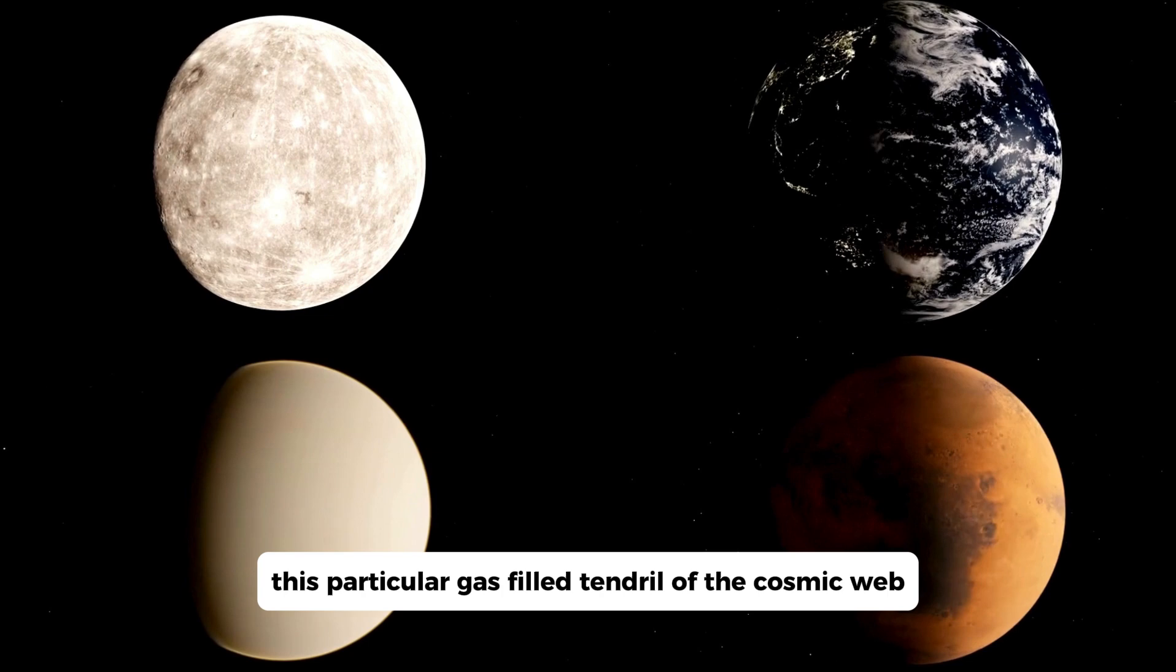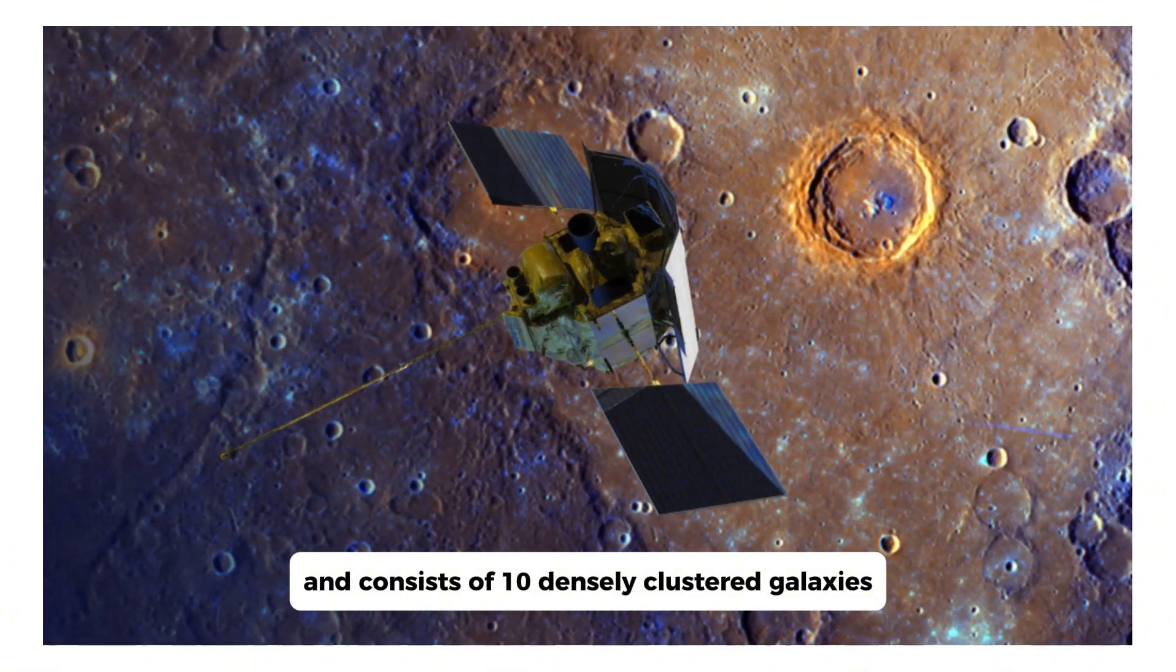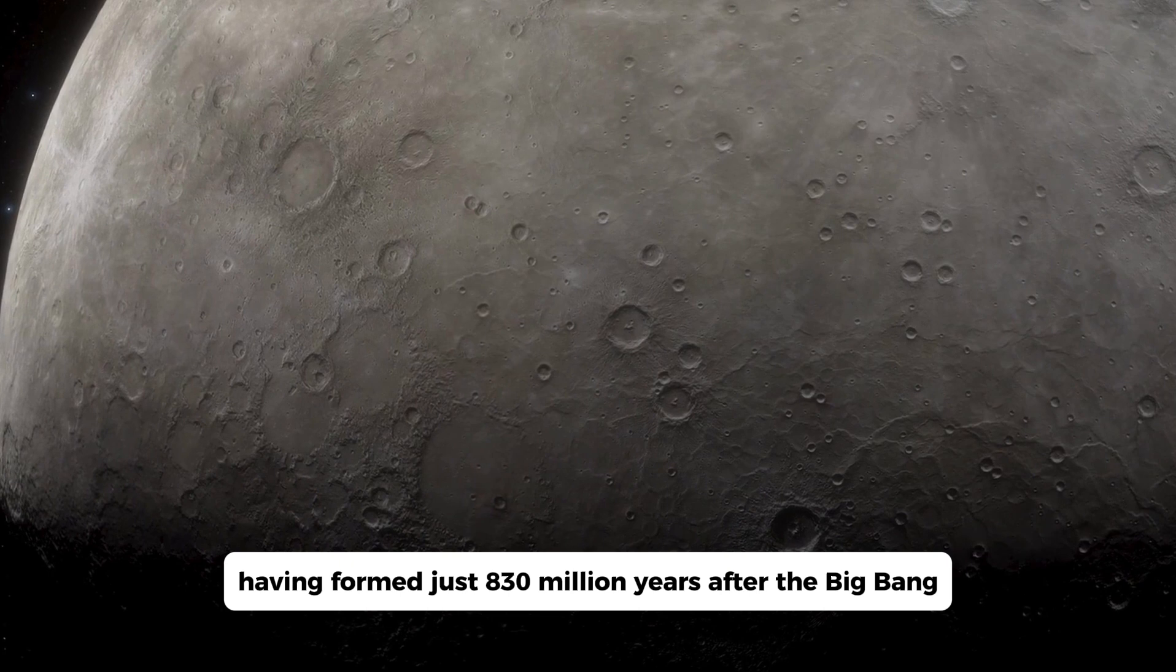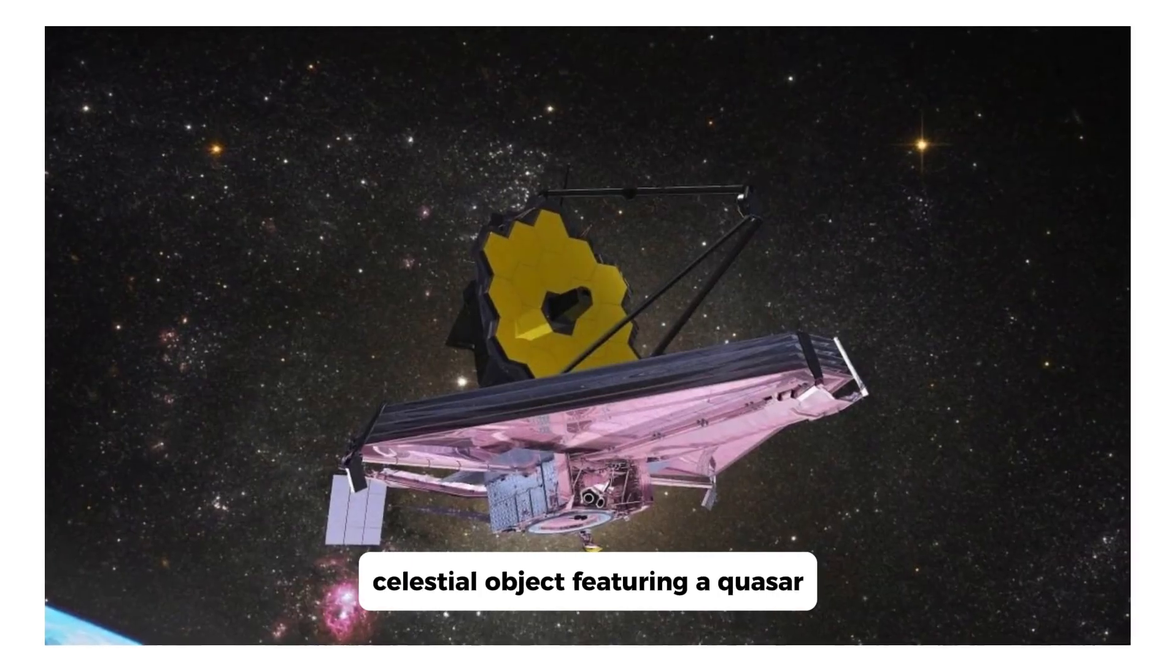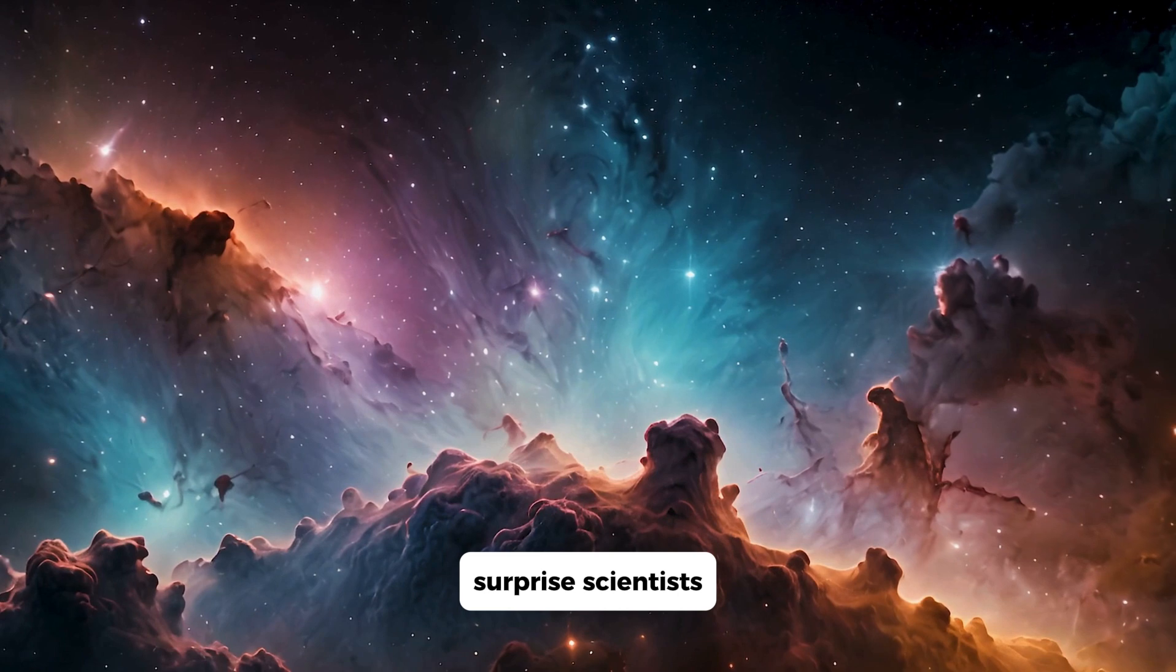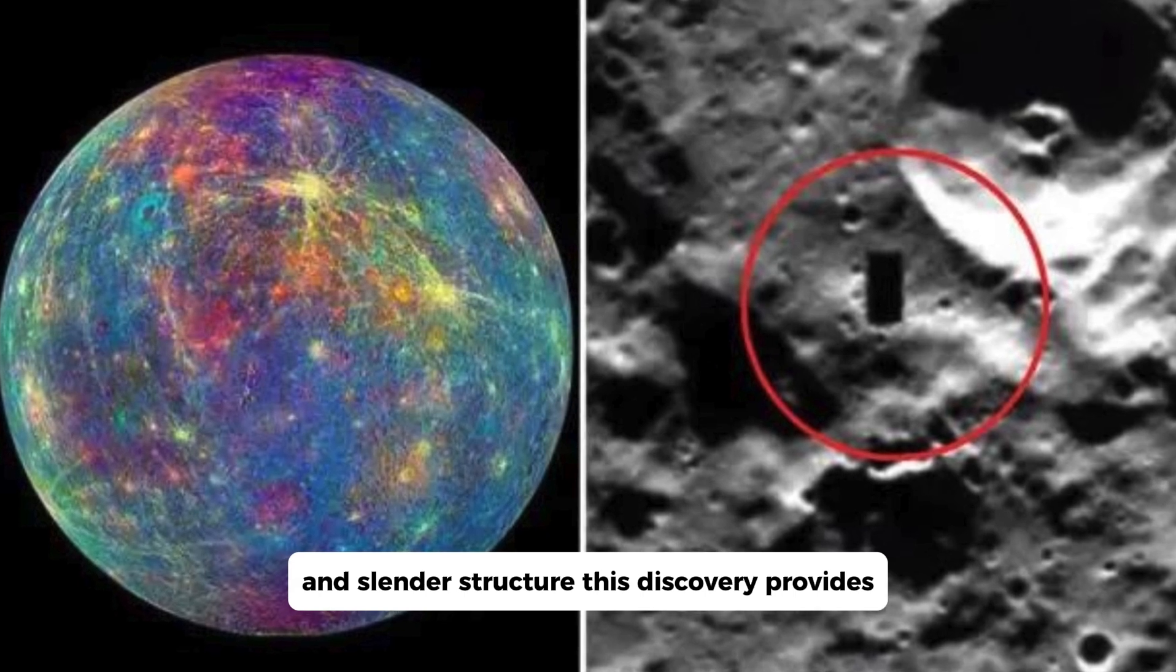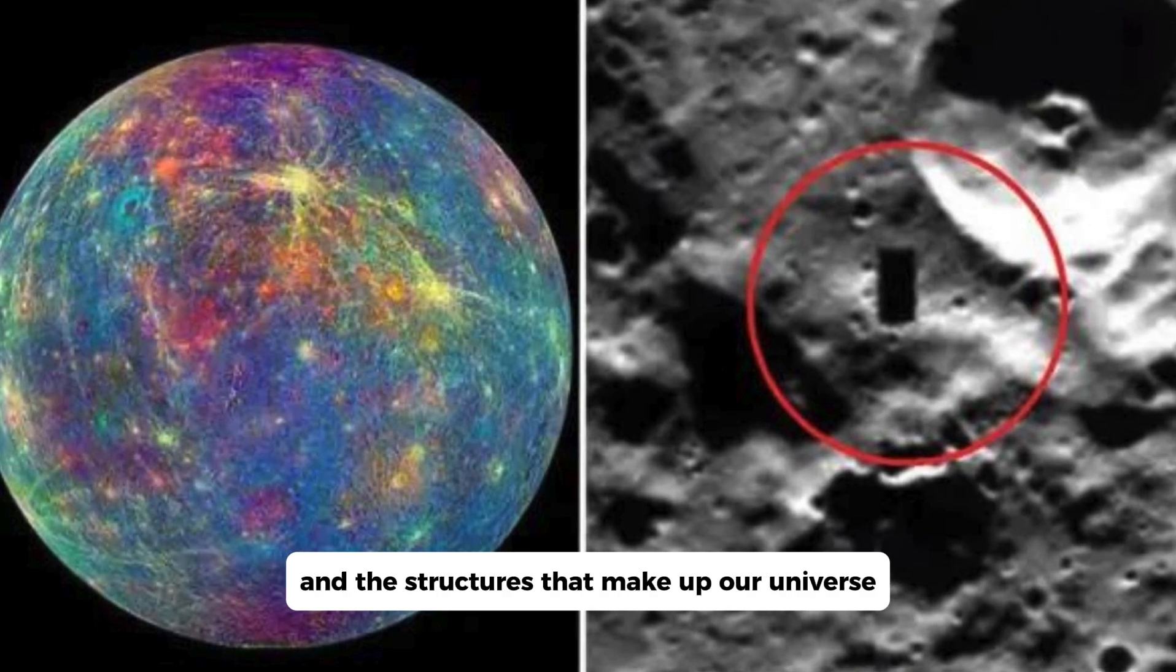This particular gas-filled tendril of the cosmic web spans more than 3 million light-years and consists of 10 densely clustered galaxies. It is believed to be one of the earliest threads in the cosmic web, having formed just 830 million years after the Big Bang, when the universe was still very young. This filament is anchored by a highly luminous celestial object featuring a quasar, a supermassive black hole at its core. The filament's extraordinary length and narrowness surprised scientists, as they were not expecting such a long and slender structure. This discovery provides valuable insights into the early development of the cosmic web and the structures that make up our universe.